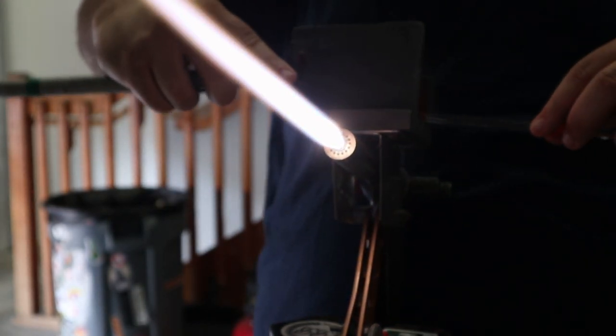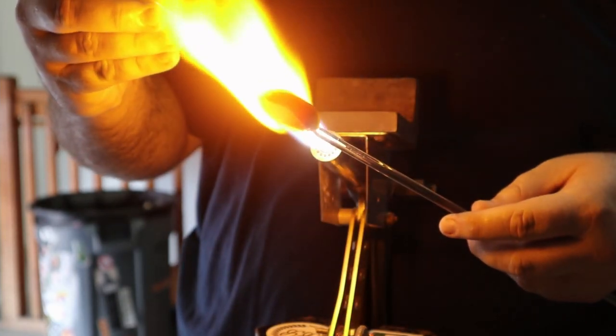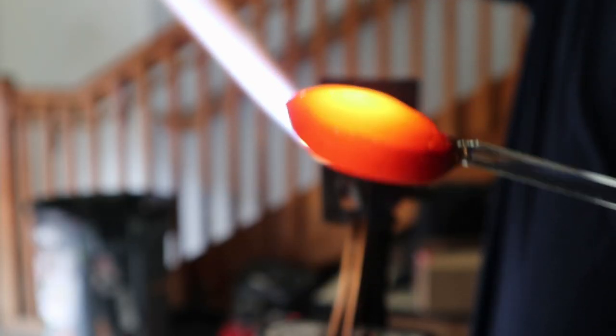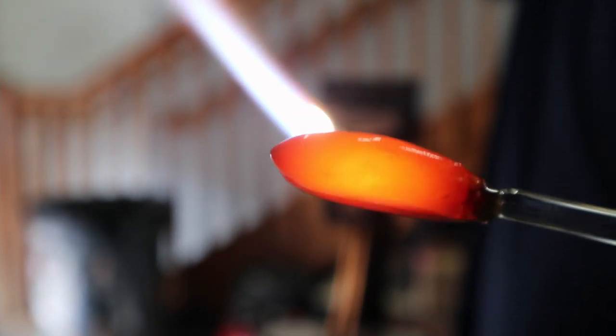So now I'm squishing it, making sure everything is nice and even. And now I want to add another layer of yellow, just to make the division of green and yellow more pronounced. So that's how I'm getting right here.